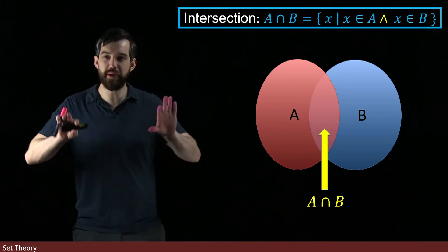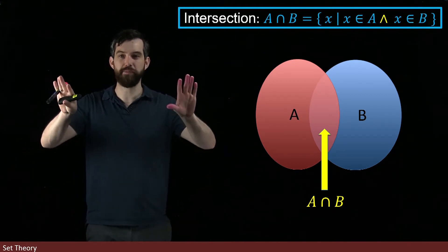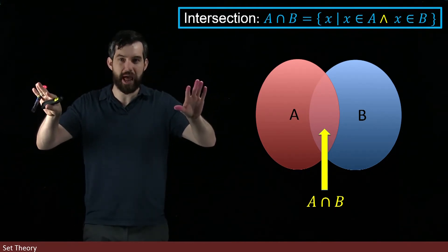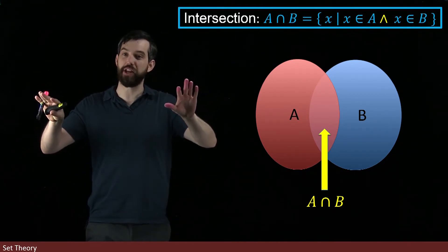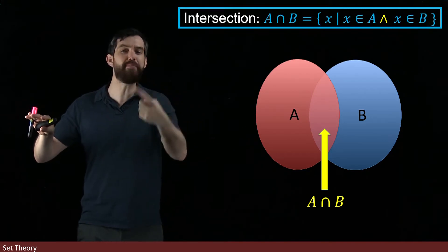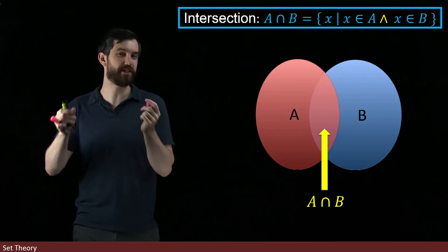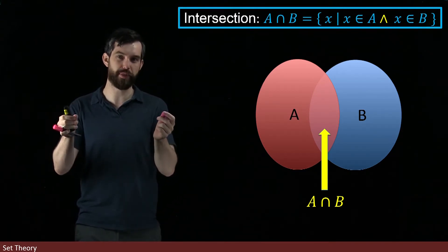If A and B were completely separate and there wasn't any overlap, then the intersection would be the empty set, because there's no element that's going to be in both of them.